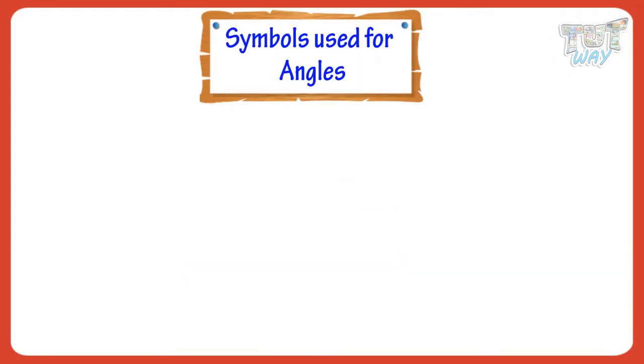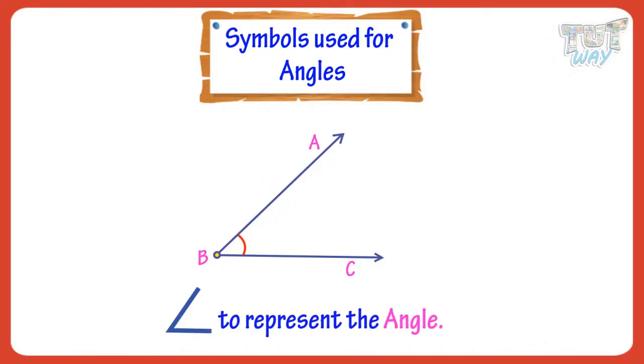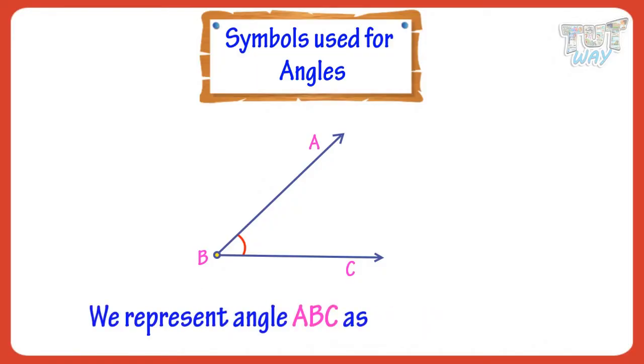Now, let's see the symbols used for representing angles. This is a symbol to represent an angle. We represent angle ABC like this, where the vertex is always placed in the center. Here, vertex is B. Let's see more examples.